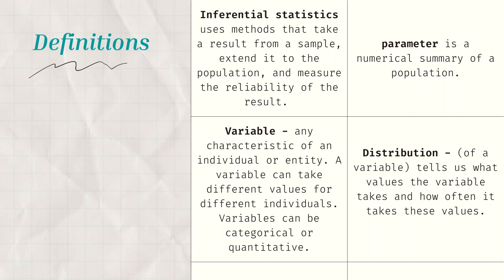Next we have the parameter. If a while ago statistics is for sample, parameter is the numerical summary of the whole population. So if you use the whole population as your respondents, then you use parameter as the numerical summary of the whole population. Next, distribution. Distribution will tell you as the researcher what values the variable takes and how often it takes these values.